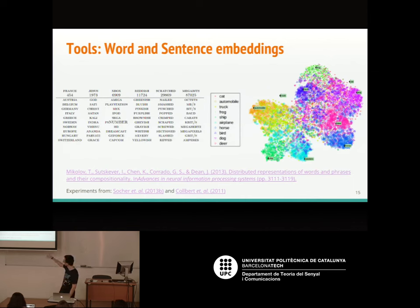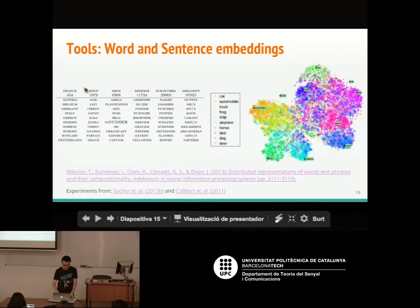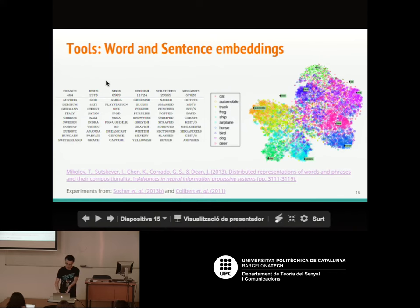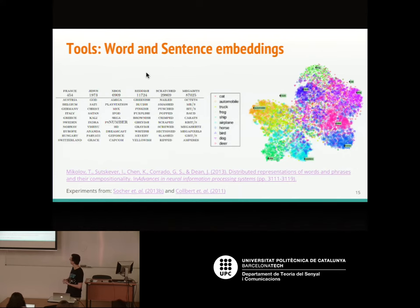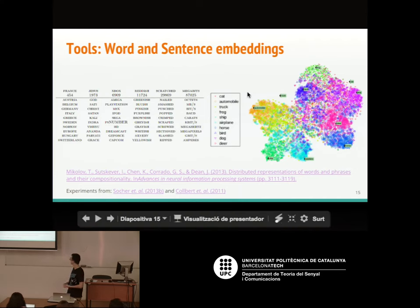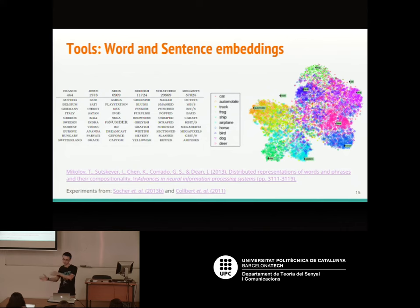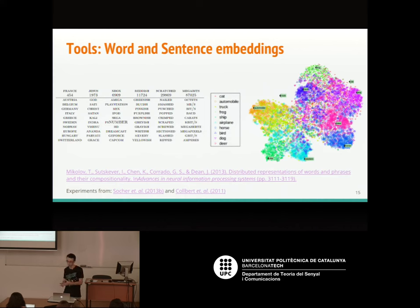For example, in an experiment by Socher, if you take the word 'France' and its embedding, the closest embeddings are other countries or geographical words. Another interesting property: if you take words, project them, and then use this learned embedding to project images into the same semantic space, images containing cats are projected close to the actual word 'cat.' So this image projection also has semantic sense.